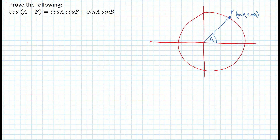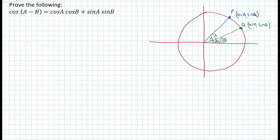I'm now going to label a second point on that circle and call it Q. I'm going to draw a line coming from the center out to Q and create an angle here, a smaller angle than A, and label it angle B. The point Q I'm going to call (cos B, sin B). What I'm going to focus on is the angle created between points P and Q. The size of that angle is the larger angle A subtracting away the smaller angle B, so that angle between P and Q is called A minus B.